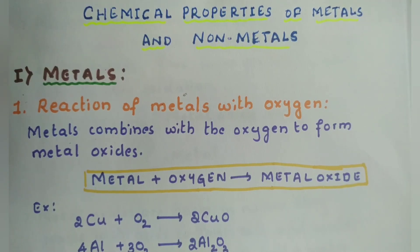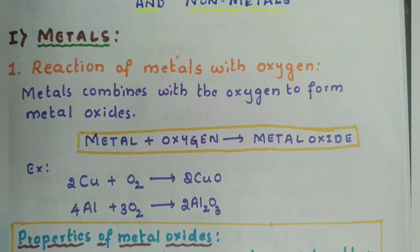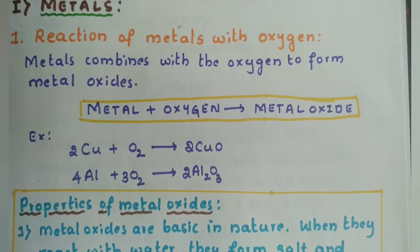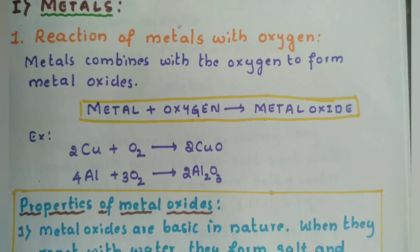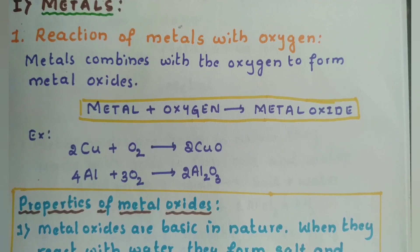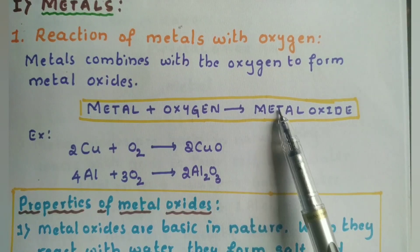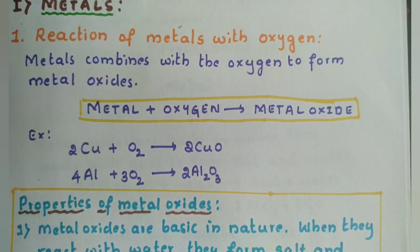Let us start with the first one: reaction of metals with oxygen. So how do metals react with oxygen? The metal reacts with oxygen to form metal oxide. We have done an activity on this — the burning of magnesium ribbon. Magnesium ribbon got burnt and it formed a white powdery substance collected in a china dish, which was magnesium oxide. So magnesium reacted with oxygen and formed metal oxide, that is magnesium oxide. Some other examples: copper reacts with oxygen to form copper oxide, and aluminium reacts with oxygen to form aluminium oxide.